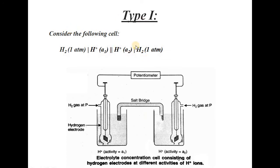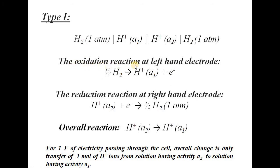First, we take the example of a gas electrode. At one side, hydrogen at pressure 1 atmosphere is in contact with hydrogen ions at activity A1. On the other side, hydrogen at 1 atmosphere is in contact with hydrogen ions having activity A2. These two half cells are connected through the salt bridge. Oxidation occurs at the left hand side where hydrogen gas releases electrons to give hydrogen ions, while reduction takes place at the right hand side where hydrogen ions take up electrons to convert to hydrogen gas.